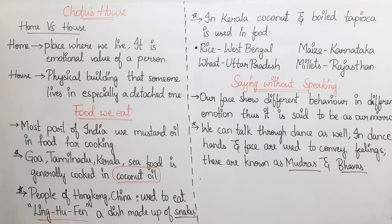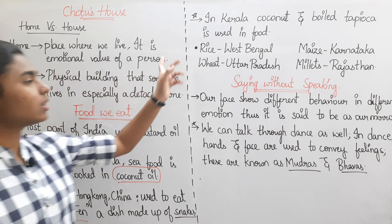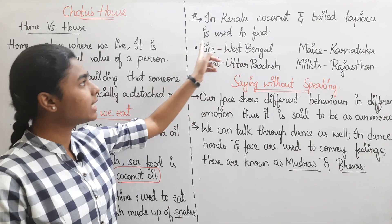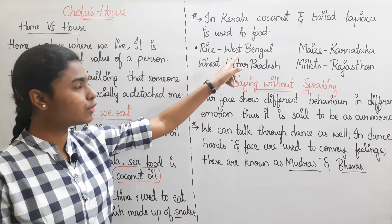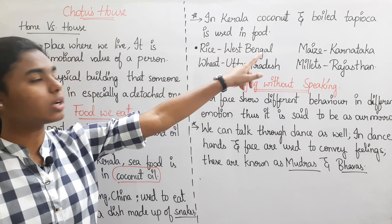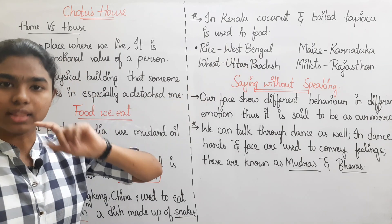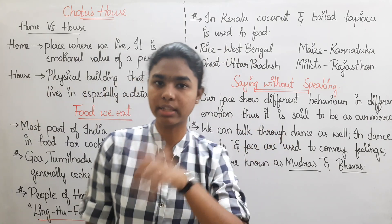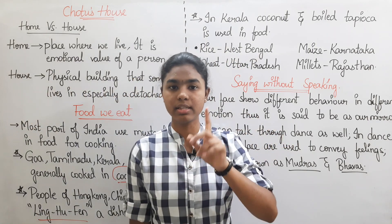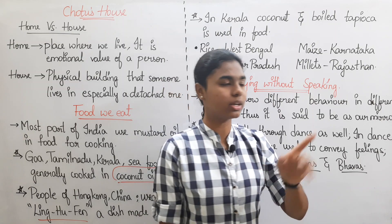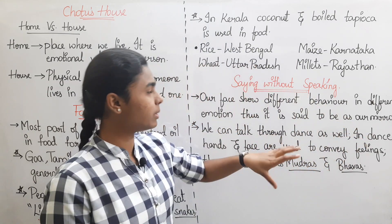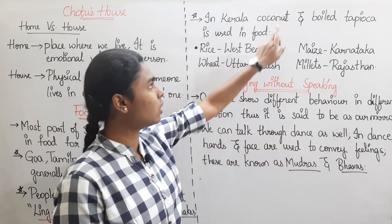In Kerala, coconut and boiled tapioca are used in food. Tapioca is also used in Telangana. Kerala is known for coconut-based preparations as mentioned in NCERT.